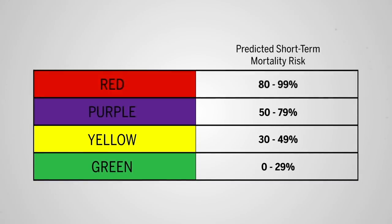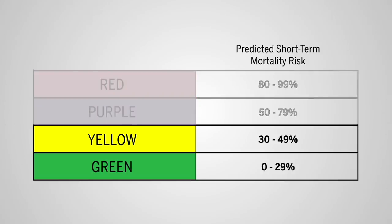In a level two triage scenario, patients who have a greater than 50% chance of surviving 12 months from the onset of critical illness should be prioritized. This includes those with color codes of green and yellow.